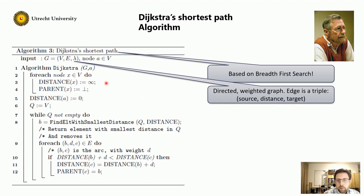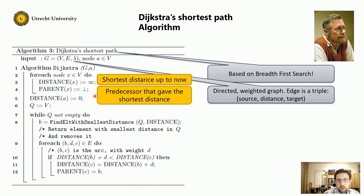In the algorithm, we keep two variables per node. Namely, its distance, and that is the shortest distance up to now, and the parent, the predecessor that gave the shortest distance. Initially, we don't know what the distance is for each node, so we initialize the value to infinity. And the same holds for the parent. We don't know, so we set it to nil.